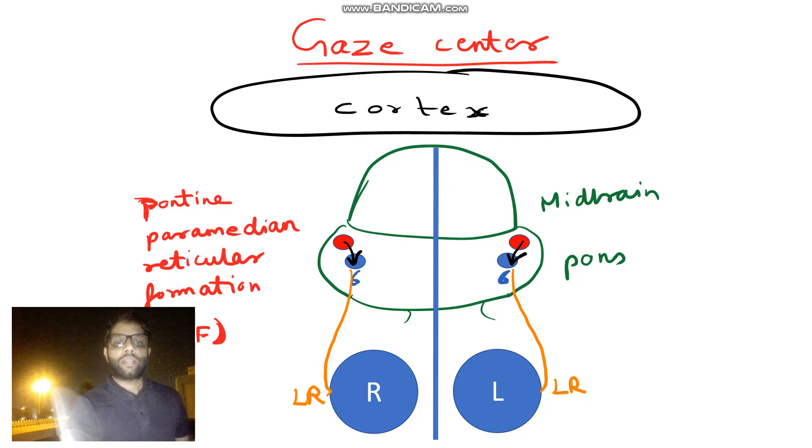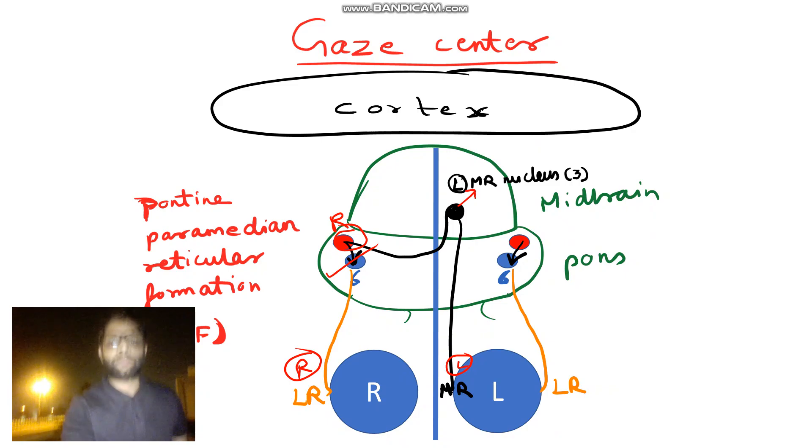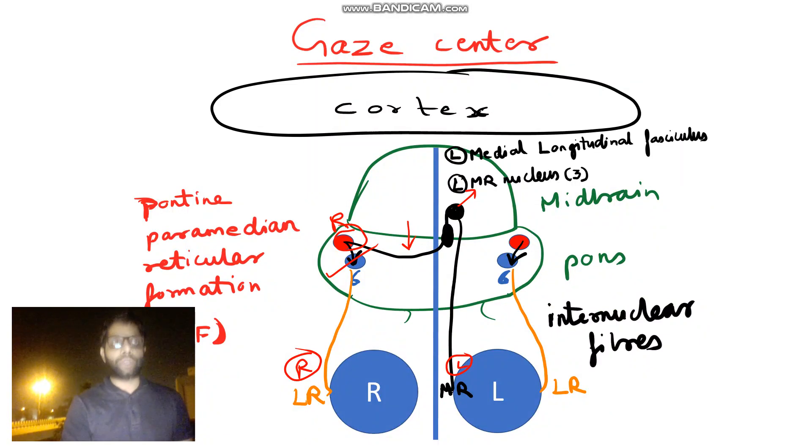But now you see, this right PPRF is supplying, is controlling the right lateral rectus via right 6 nerve nucleus, that is okay. But this right PPRF is also giving, is also controlling left medial rectus. But left medial rectus is controlled by third nerve. So yes, this black one is nothing but third nerve medial rectus nucleus. And it is passing through these fibers which are joining one nucleus to another nucleus, that is internuclear fibers. Other name is medial longitudinal fasciculus. They are medially going up and they are fasciculus, bundle of nerves, that is MLF, but on the opposite side. So right PPRF controls right LR and left MR, but left MR is via left MLF, left third nerve nucleus.